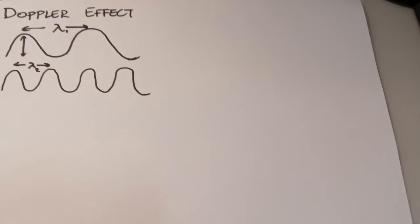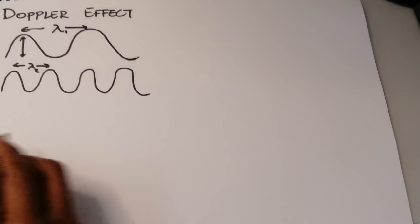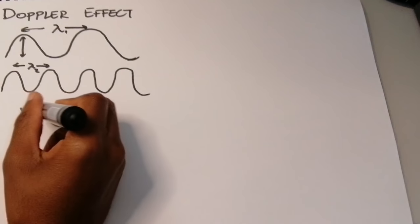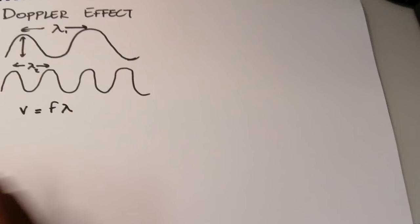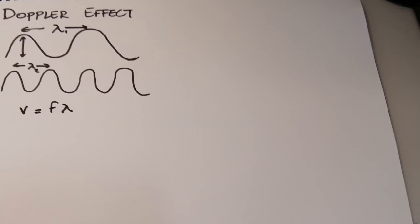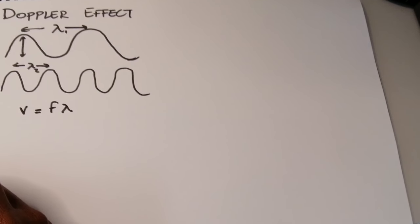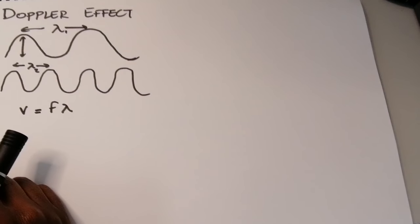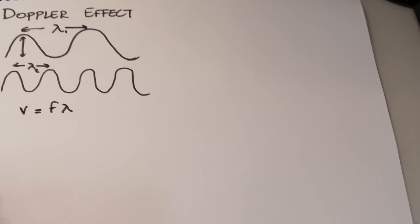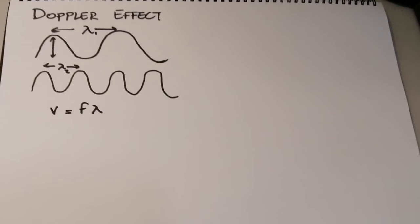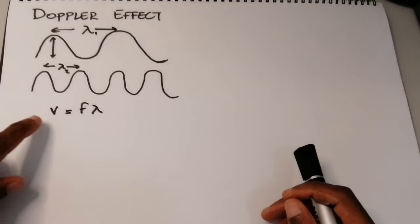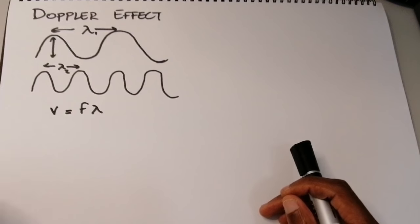There's a formula we normally use for waves. I won't go too much into it because I want us to get into the Doppler effect. We usually say V equals F times lambda. Sound is able to travel between two points, so sound does have a speed. The speed of sound depends on the medium — the speed of sound in air would be different to the speed of sound in water.